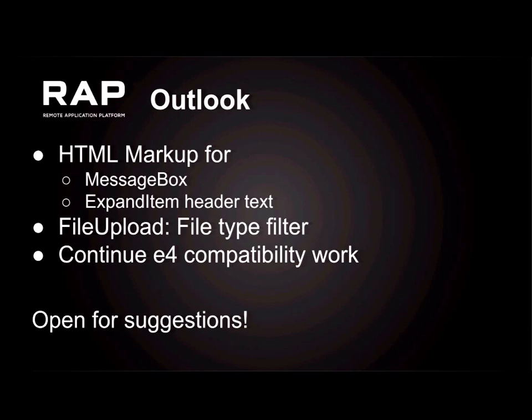Another thing we are working on is the compatibility work with E4. We hope to migrate the incubation part in the next release cycle. We are still discussing what makes sense from a user perspective for the next RAP release — we are open for suggestions. There are lots of bugs in Bugzilla and feature requests. We are trying to prioritize those, but it's really up to the user base to decide what's most important. We are always looking for feedback. The plans for the next RAP release are not yet finalized — discuss with us on the mailing list or newsgroup. That's my short intro and overview about RAP, RAP 3.1, and the outlook. Thanks for attending. This was the last talk of EclipseCon Europe 2016.